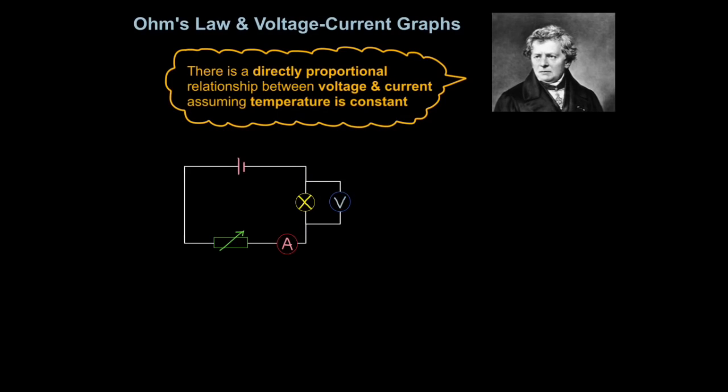So you can use this circuit to work out the relationship between the current flowing through this bulb and the voltage across it. You can vary current and voltage by changing the variable resistor. The higher the resistance, the lower the current, the lower the voltage.